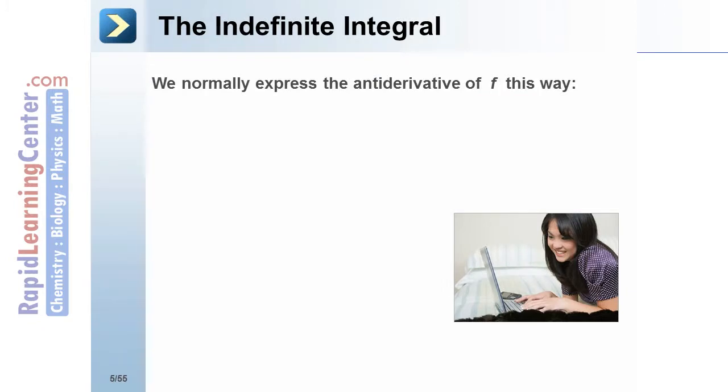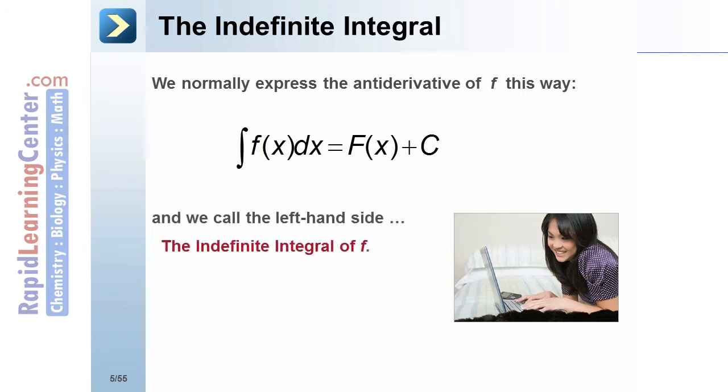We normally express the antiderivative of f(x) this way: The integral of f(x) is equal to F(x) + c. And we call the left-hand side the indefinite integral of f. The constant c is called the constant of integration.